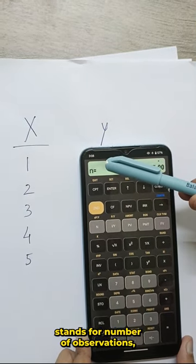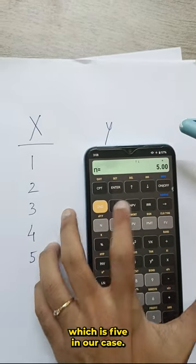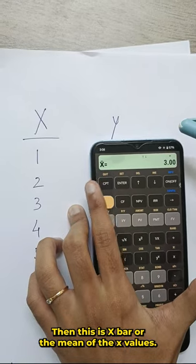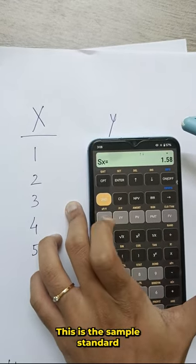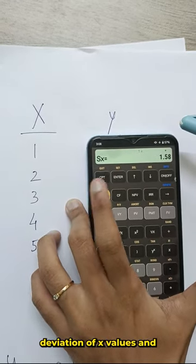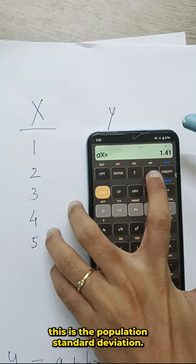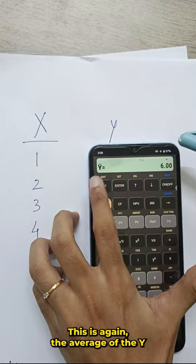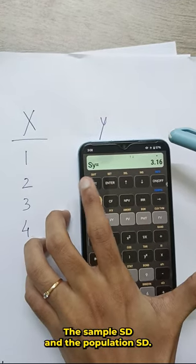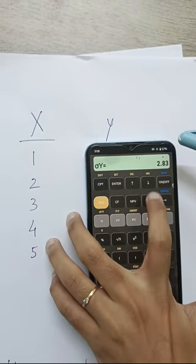N stands for number of observations which is 5 in our case. Then, this is x bar or the mean of the x values. This is the sample standard deviation of x values and this is the population standard deviation. This is again the average of the y values, the sample sd and the population sd.